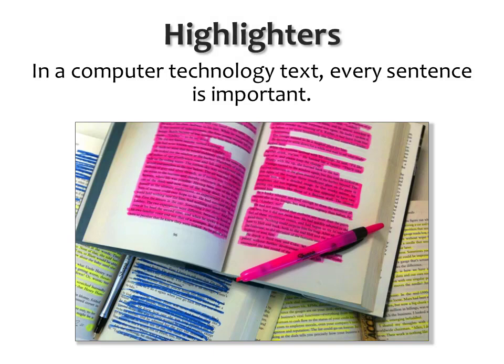One common study technique is the use of highlighters, or perhaps underlining, to call out the significant parts of a text. In a computer technology text, every sentence is important. For example, in a history class, you might need to remember the people and dates of significant events. Highlighting can help emphasize those, but for your computer systems classes, you need to be familiar with individual topics, but also how these topics fit in the complete whole. Highlighting is not itself bad per se, but it's not particularly useful either.